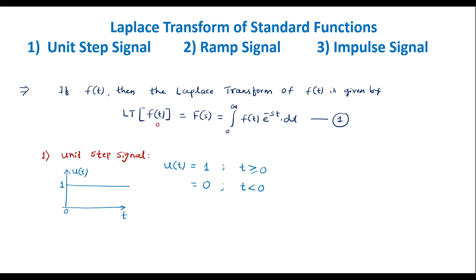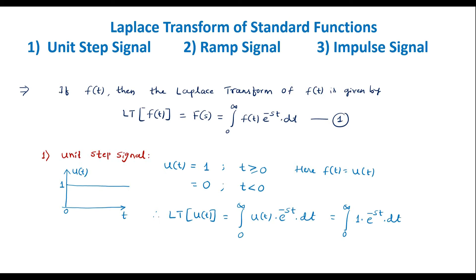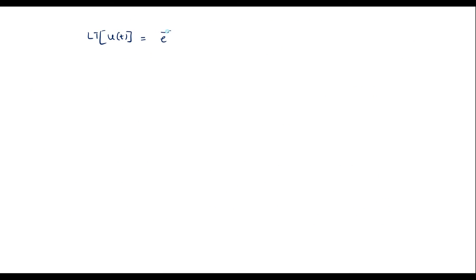Here the function is f of t equal to u of t. The Laplace transform of u of t is equal to the integration of 0 to infinity of u of t times e to the power minus st dt. Simplifying, the Laplace transform of u of t equals the integration of e to the power minus st, which gives e to the power minus st divided by minus s, with the limit 0 to infinity.